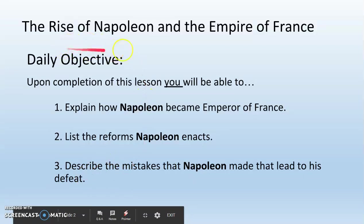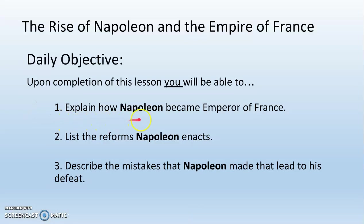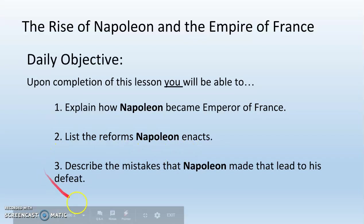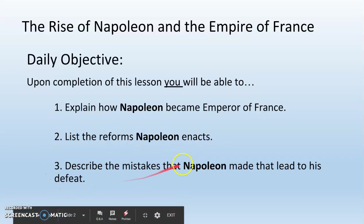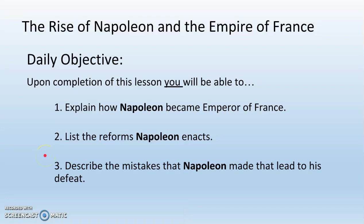Today we are going to learn about the rise of Napoleon and the Empire of France. We have three daily objectives. Number one, explain how Napoleon became emperor of France. Number two, list the reforms that Napoleon enacts. And number three, describe the mistakes that Napoleon made that lead to his ultimate defeat.